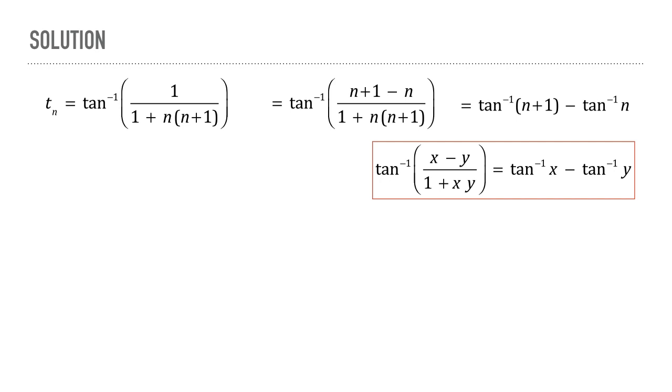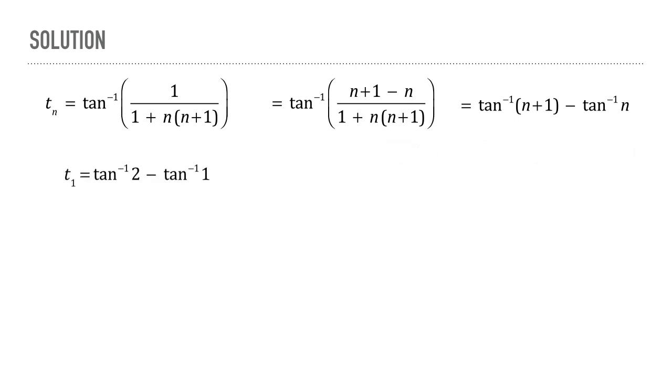Now putting n equals 1, we find that term 1 can be written as tan inverse of 2 minus tan inverse of 1. Term 2 can be written as tan inverse of 3 minus tan inverse of 2, and so on till the last term.